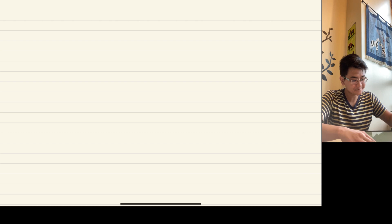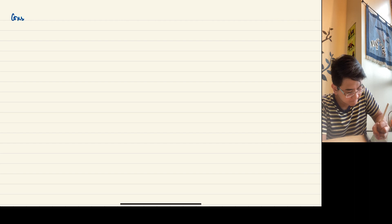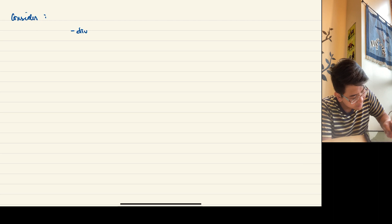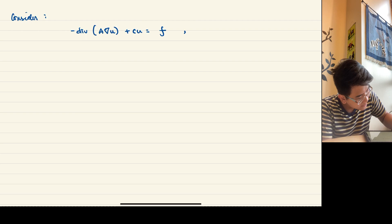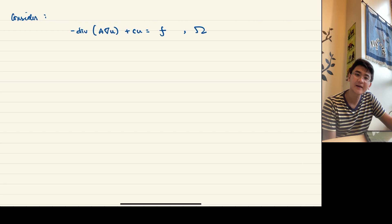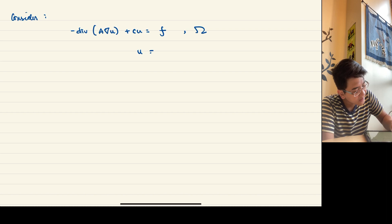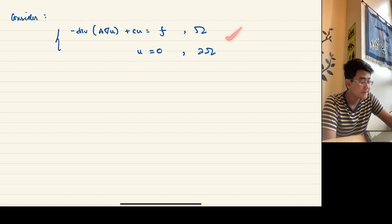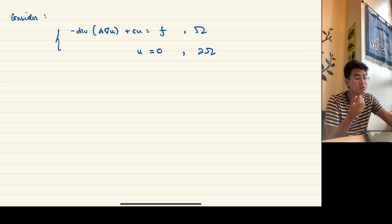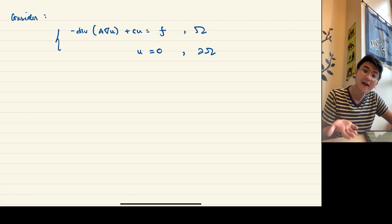So we consider the following problem: negative divergence of A grad U plus CU equals F in omega, where omega is a bounded open subset of R^n with a nice boundary. We also have zero Dirichlet boundary conditions. This is an elliptic PDE in divergence form, and the goal is to look at weak solutions and say something about their regularity — that is, how nice they are.